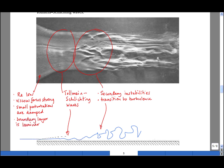And then at higher Reynolds number, where the inertial forces are strong relative to the viscous forces, one obtains a fully turbulent boundary layer.